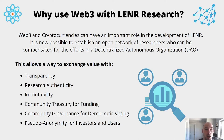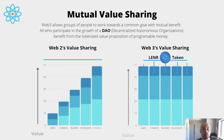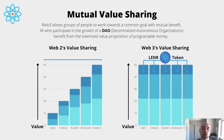Why use Web 3 with LENR research? Web 3 and cryptocurrencies can have an important role in the development of LENR. It is now possible to establish an open network of researchers who can be compensated for their efforts in a Decentralized Autonomous Organization, or DAO. This allows a way to exchange value with transparency, research authenticity, immutability, a community treasury for funding, community governance for democratic voting, and pseudo-anonymity for investors and users alike. Web 3 allows groups of people to work toward a common goal with mutual benefit — all who participate benefit from the tokenized value proposition of programmable money.